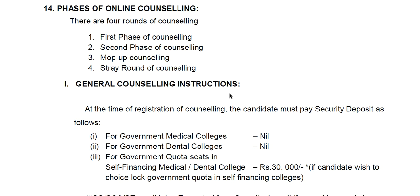We will take 4 rounds of counseling. That is the first phase of counseling — the first round, second round, mop-up round, as well as the stray vacancy round. There are 4 phases of online counseling.